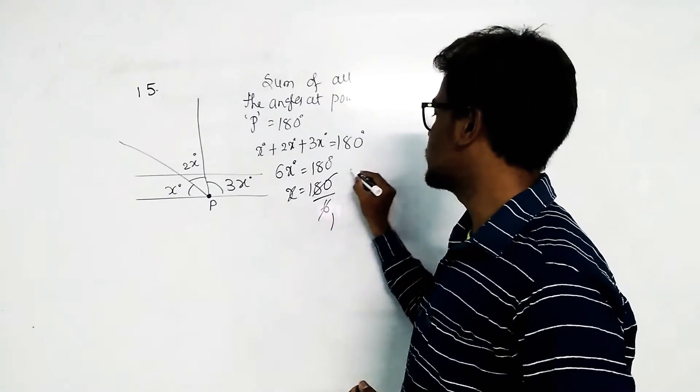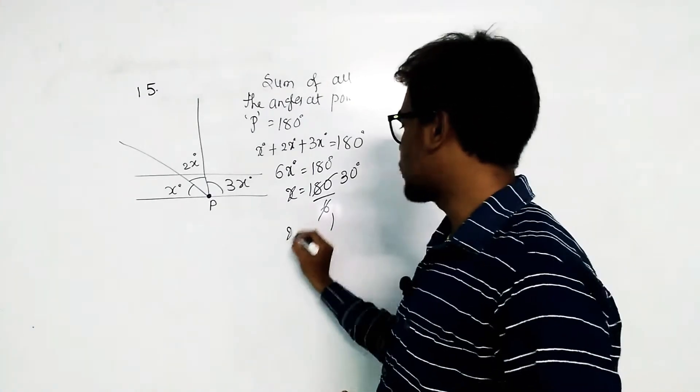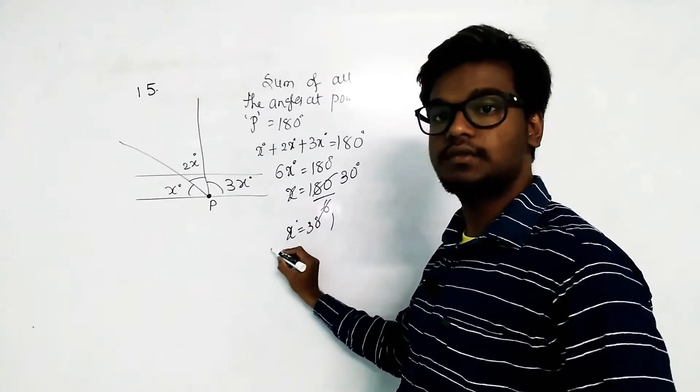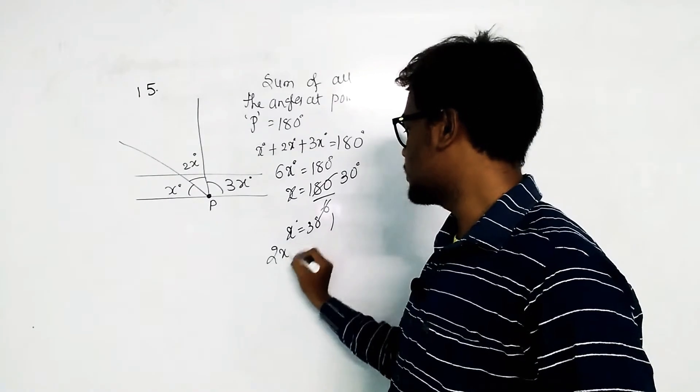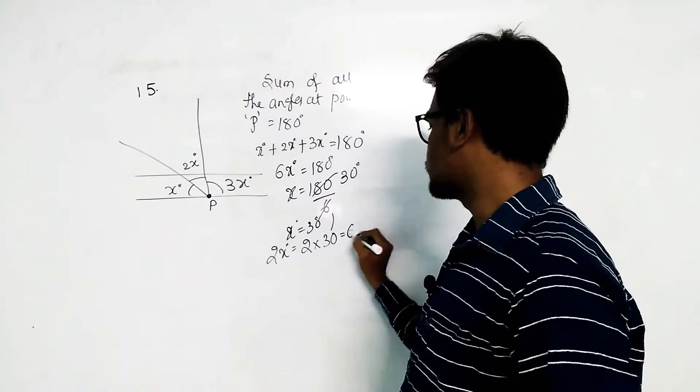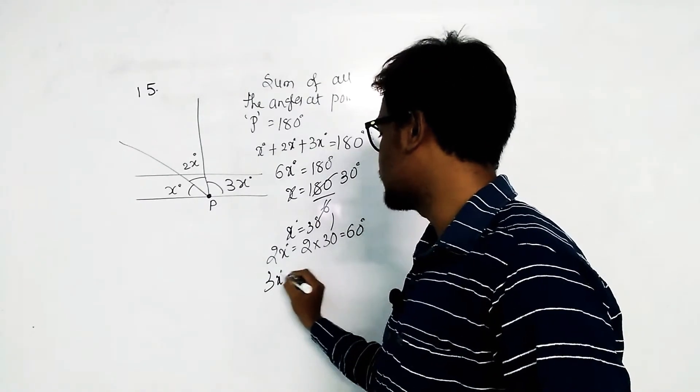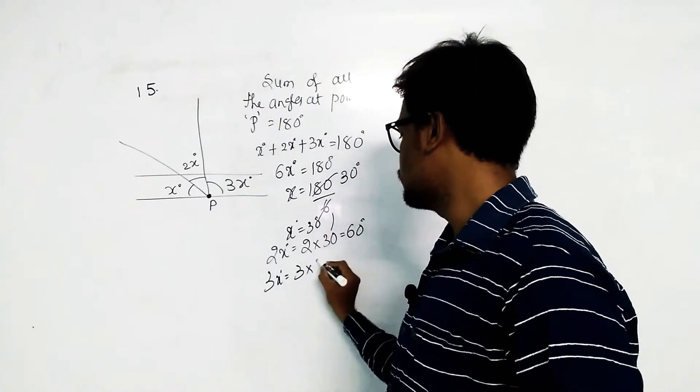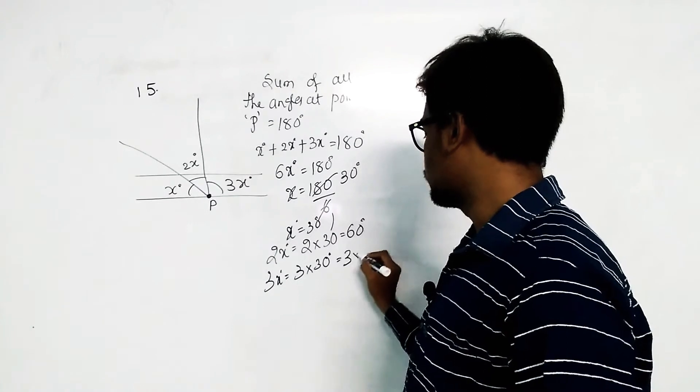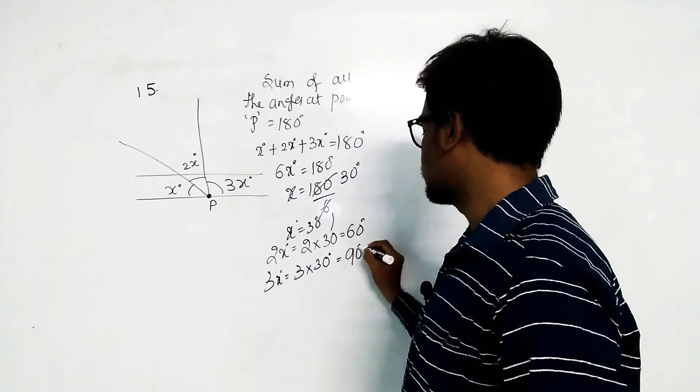Now we got x as 30 degrees. Then 2x will be 2 into 30, that is equal to 60 degrees. The remaining last angle is 3x, which is 3 into 30, equal to 90 degrees.